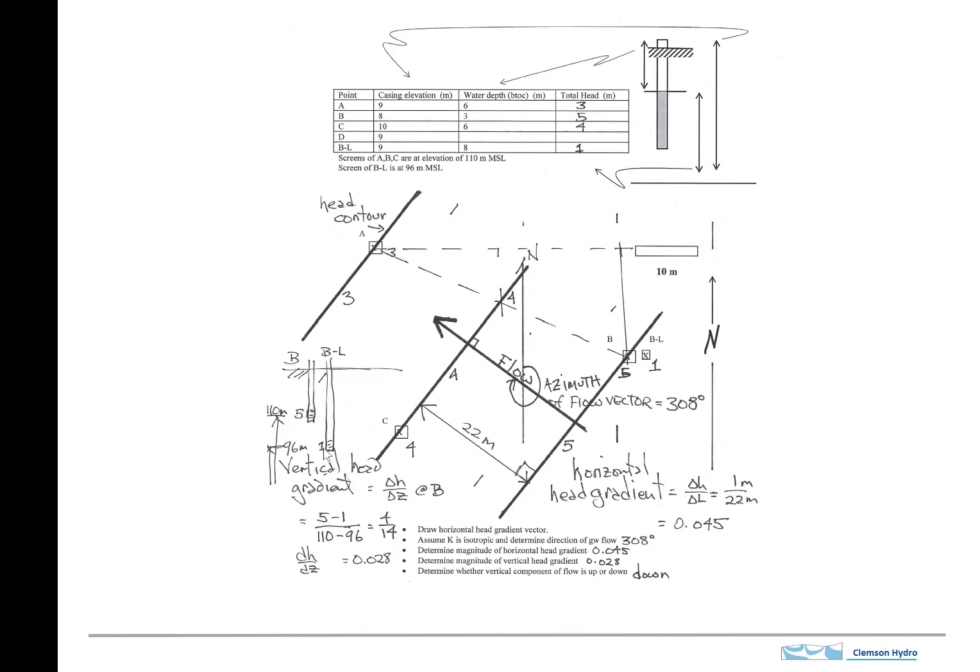The head here is 5, and the head here is 1, so the hydraulic head gradient in a vertical direction is 4 divided by 14, or that number. And we're also interested in determining what direction the flow might be,